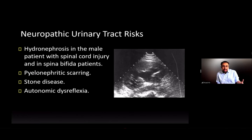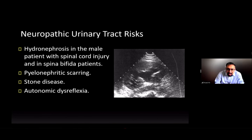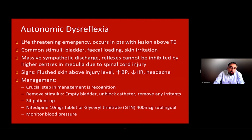Neuropathic urinary tract risks are significant — it used to be the most common cause of death among spinal injury patients until better bladder management was established. Risks include hydronephrosis, long-term renal failure in males, pyelonephritis, renal scarring from infection, and stone disease, as well as autonomic dysreflexia.